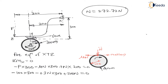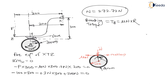Looking at the free body diagram of the brake drum, the frictional force is tangential and is creating torque. The braking torque equals frictional force into radius of drum, that is mu*N*r. Therefore, braking torque = 0.3 into 272.72 into 100, which gives 8.18 into 10 to the power 3 newton mm.